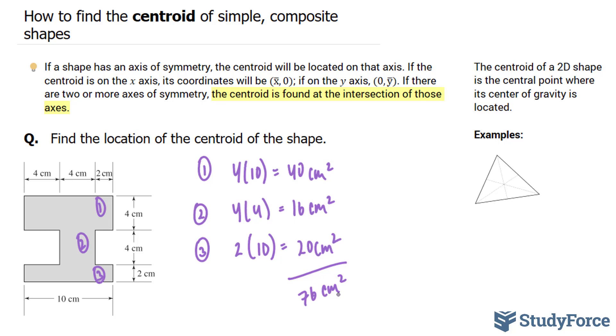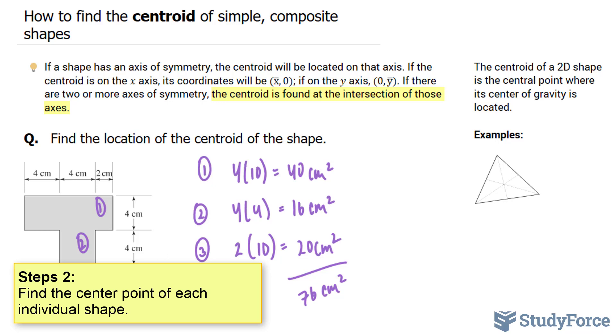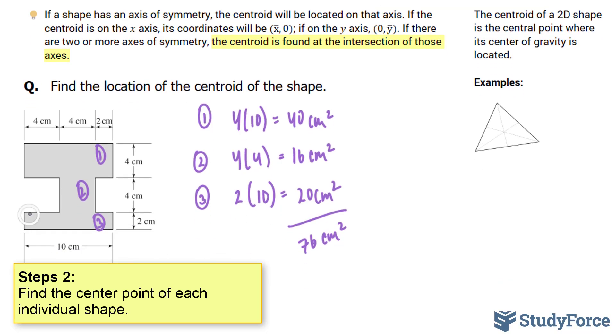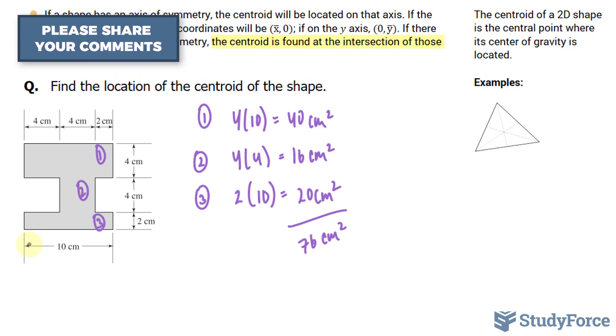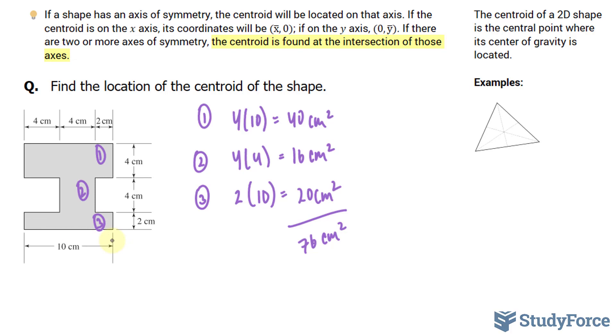Next, what we have to do is find the centroid of each of these individual shapes. Let's start with the first one. And let's put this shape on an xy plane. So if I call this my y-axis, and this is my x-axis, I should end up with something that looks like this.